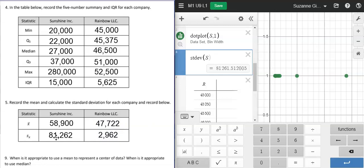As we see here, we're looking at our values. Looks like the average salary is more for Sunshine than it is for Rainbow. But if we look at the medians, this is interesting. The middle number for Rainbow is 46,500, and the middle number for Sunshine is 27,000.